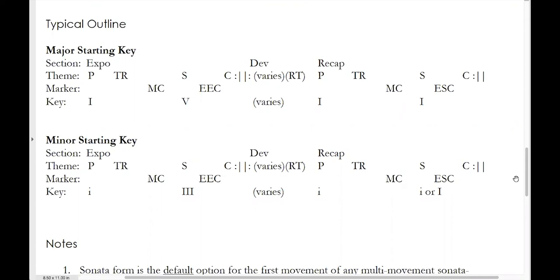Comparing these two charts, the only difference between them is the key scheme. If you start in a minor key, most often the secondary key will be the mediant key — the relative major. One other interesting thing about minor sonata forms is that the recap will typically go back to tonic minor, but the secondary theme and the closing theme in the recapitulation can be brought back either in tonic minor or in tonic major. The choice between these two really varies by composer. Mozart pretty much always brings his secondary theme back in tonic minor, while Beethoven and Haydn use both options in different pieces with some frequency.